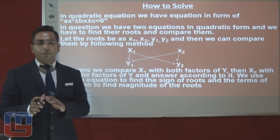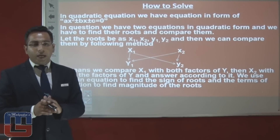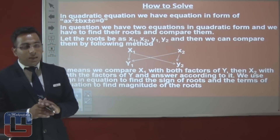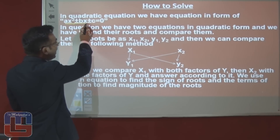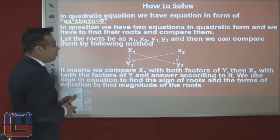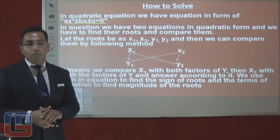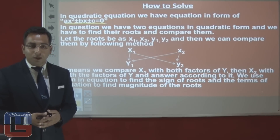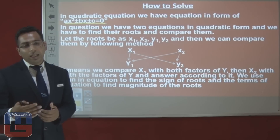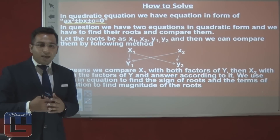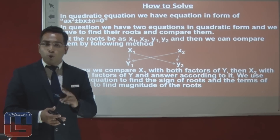Today we will learn how to solve quadratic equations quickly in the exam, because most of the questions from this chapter come from quadratic equations. Any quadratic equation is given in the form ax² ± bx ± c = 0. We use the ± sign because we don't know in which form we get the equation — it could be in plus or minus form.